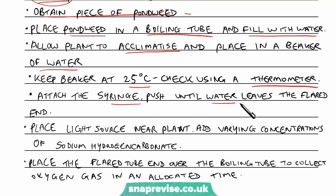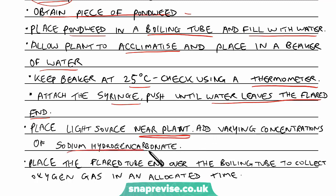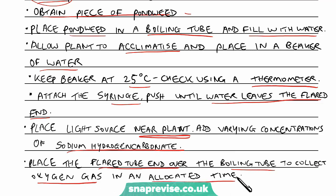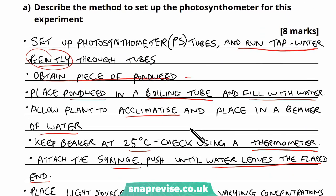Attach the syringe at the other end and push it until the water leaves the flared end, so we have a complete system where water is running through. Then place the light source near the plant so it has UV light with which to photosynthesise. Add the varying concentrations of sodium hydrogen carbonate to each setup. Then place the flared tube end over the boiling tube so it can collect the oxygen gas the plant gives off, and leave it for the allocated time. We've easily covered eight marks there.